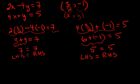Alright, notice that we've got 7 equals 7, that's a true statement, and 5 equals 5, that's a true statement. So therefore, 3 over 2, negative 1, is a verified solution.